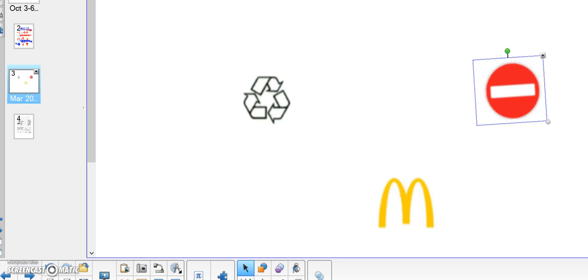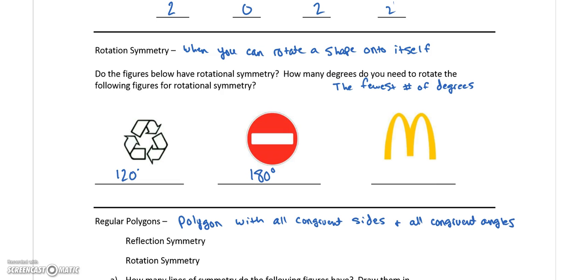The McDonald's logo, hopefully that's pretty obvious. I would have to go an entire circle. So we would either say this does not have rotational symmetry, or we could say 360, right? 360 degrees. But I'll put that in parentheses because that's not considered rotational symmetry, just because every shape can be rotated 360. There's nothing special about that.